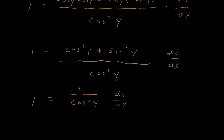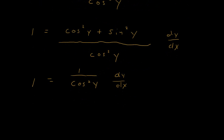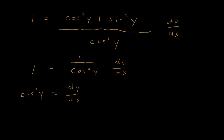We want to solve for dy/dx. Multiplying both sides by cosine squared of y, we get cosine squared of y on the left, and the cosine squared terms cancel on the right, leaving just dy/dx. However, we want this result in terms of x, and currently we have the derivative equal to cosine squared of y.